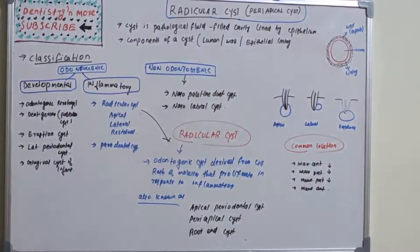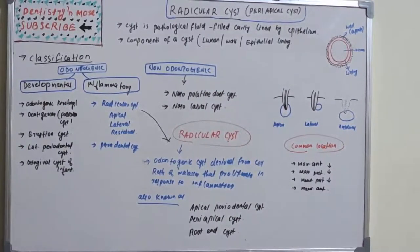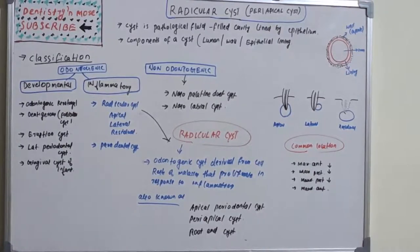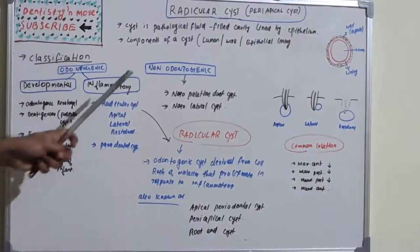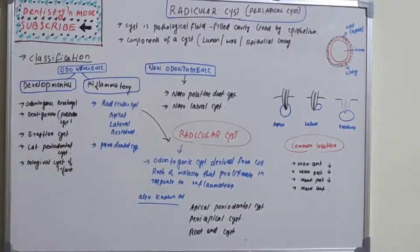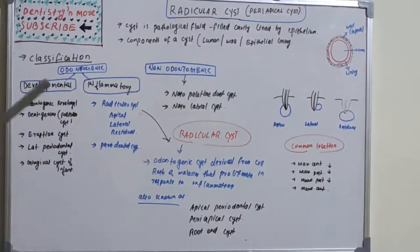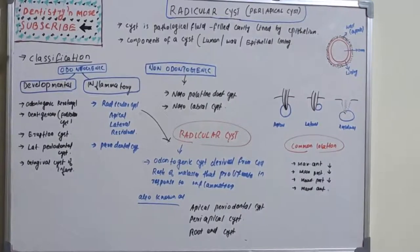Now moving on to classification. We have basically two types: odontogenic and non-odontogenic. From the name itself we get the idea — odontogenic is tooth-related and non-odontogenic is not tooth-related, referring to the tissue of origin. Odontogenic cysts are further divided into two types: developmental and inflammatory.